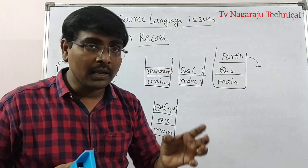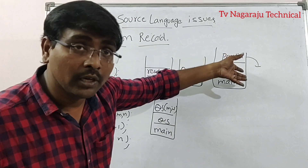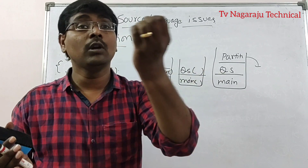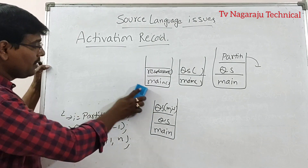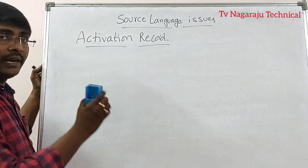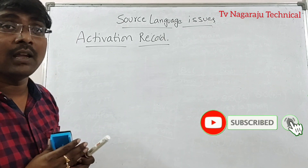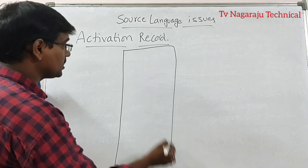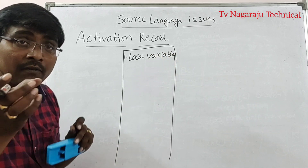Activation record: simply, whenever you are calling the procedure, the activation record is pushed into the stack. Once that procedure is completed, the activation record is popped out of the stack. This is an example. Finally, how does the activation record look? The activation record consists of: first, local variables — the variables that hold the local data during the procedure execution.